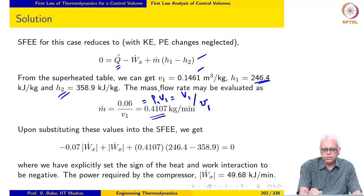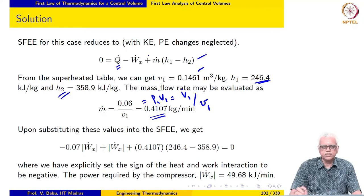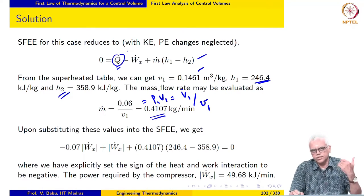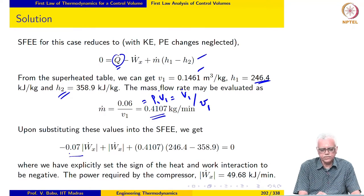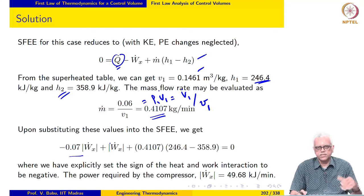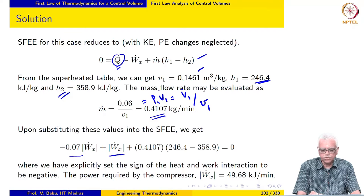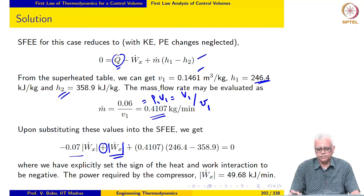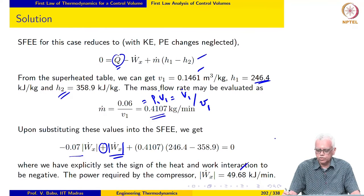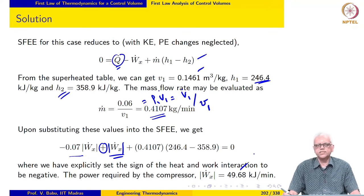You have to be careful with the numbers and signs for Q-dot and Wx-dot in this case. Remember Wx-dot is negative because it is a compressor — we have to supply power. Q-dot is also negative because that is heat loss to the ambient. We explicitly account for this by writing the Q-dot term as minus 0.07 times Wx-dot, since that is 7% of the input power. This has been taken into account by changing to a plus sign and using absolute value around Wx-dot. Doing all this, the absolute value of Wx-dot is 49.68 kJ/min, so the compressor input power is 49.68 kJ/min.